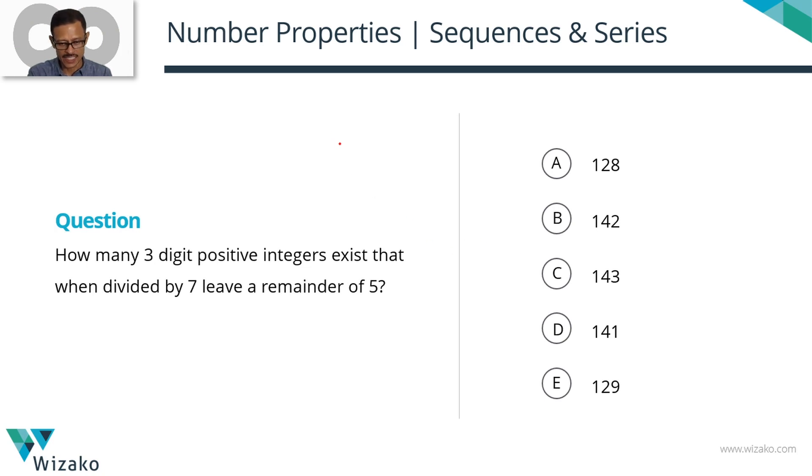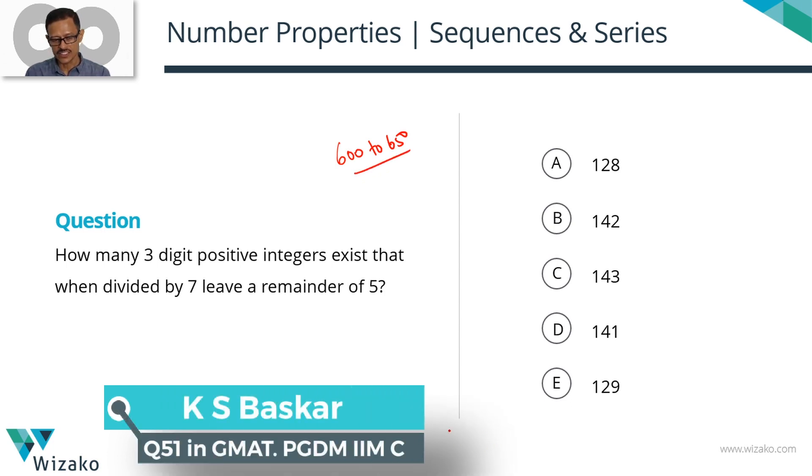This is an easy question, arithmetic progression. I'll classify this question as a 600 to 650 level GMAT problem-solving question. How many three-digit positive integers exist that when divided by 7 leave a remainder of 5?